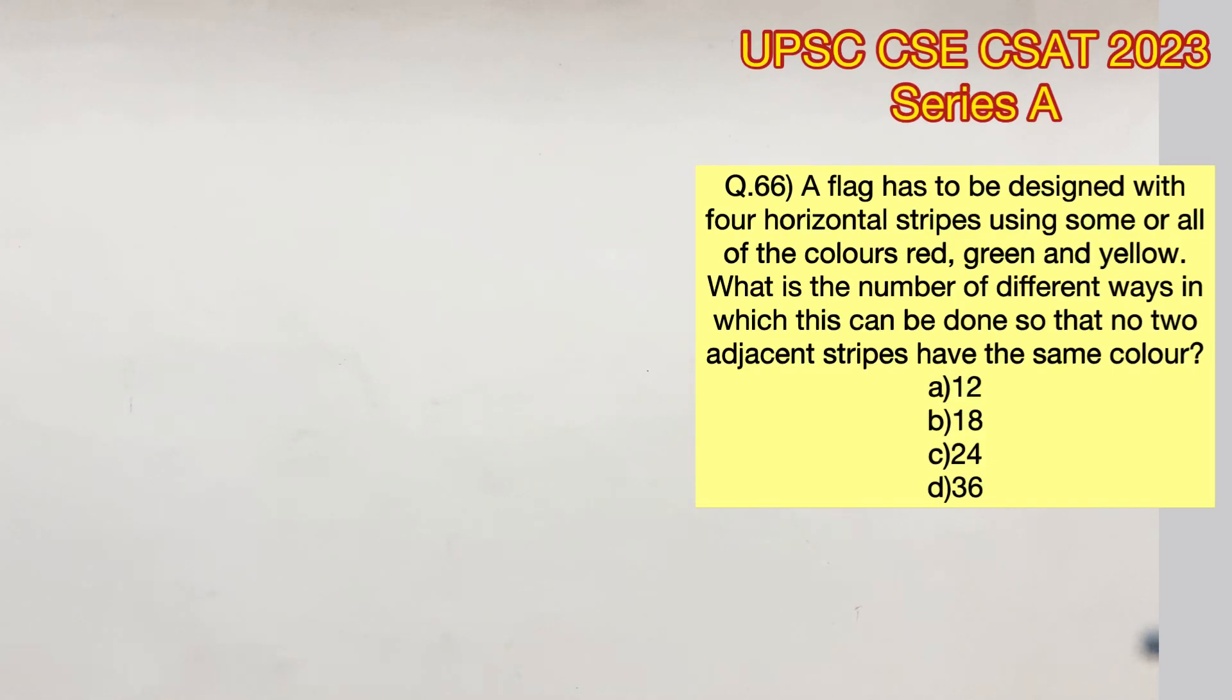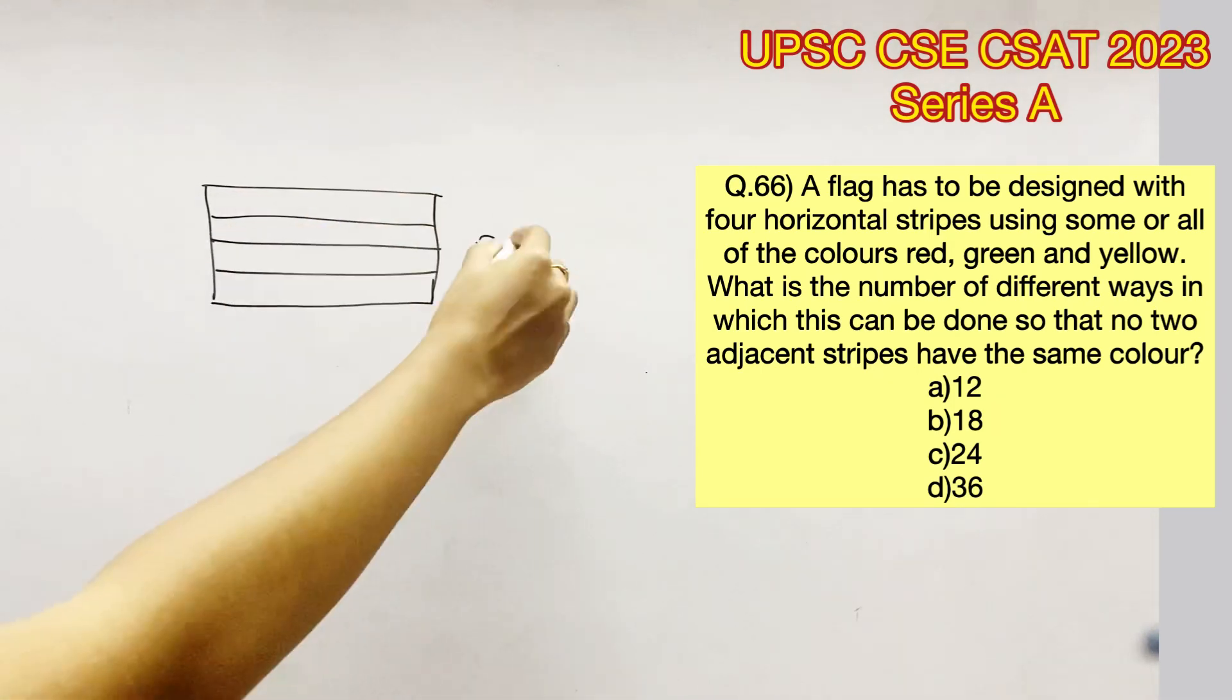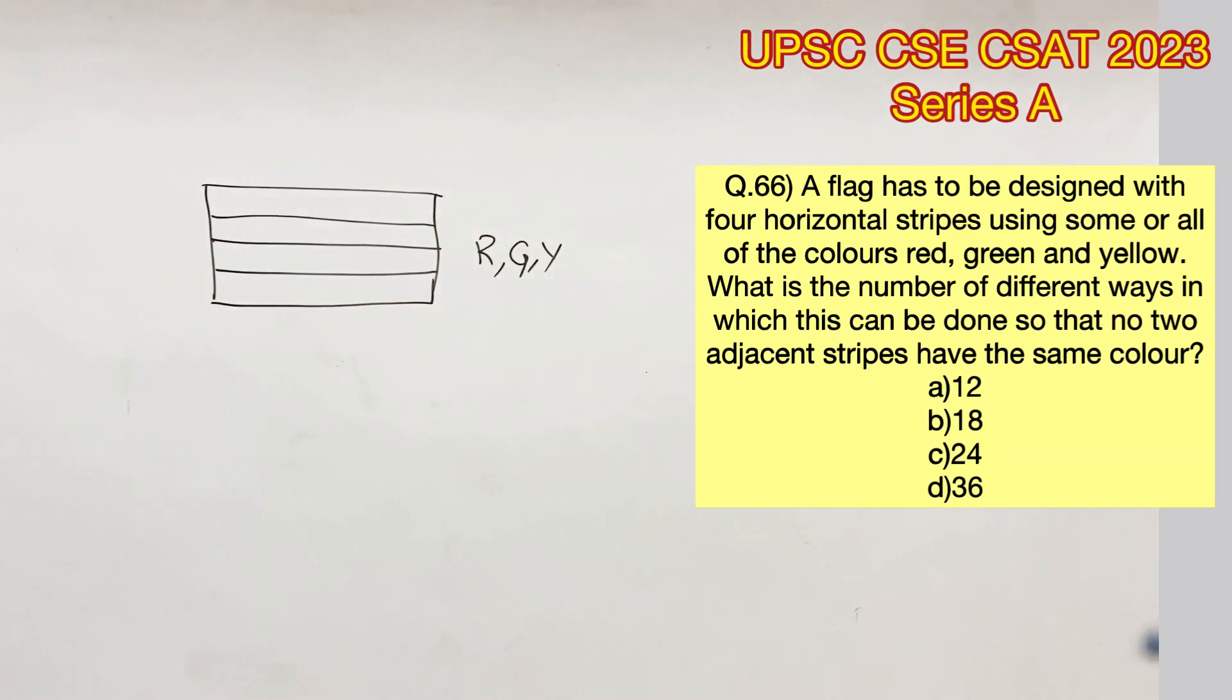Welcome to Aptitude Destination. Please pause the video and read the question completely. A flag has four horizontal stripes using colors red, green, and yellow, which need to be arranged in different ways so that no two adjacent stripes have the same color. We need to find the number of ways with which these conditions are possible.